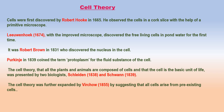Cell theory. In 1838, Jacob Matthias Schleiden, a German botanist, first proposed the idea that all plants consist of cells. A year later, in 1839, Theodor Schwann, a German zoologist, independently asserted that all animals and plants are made up of cells. This joint finding forms the basis of the cell theory.